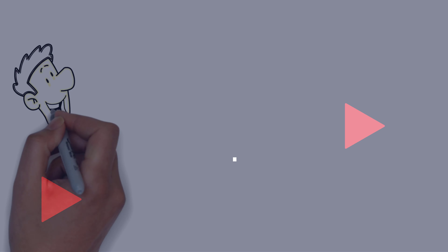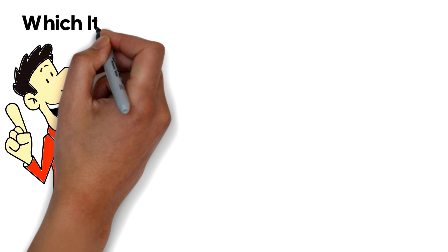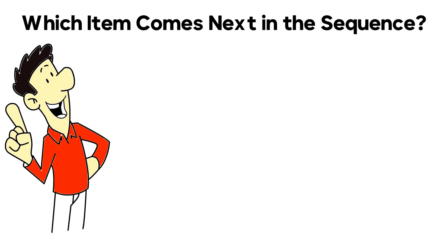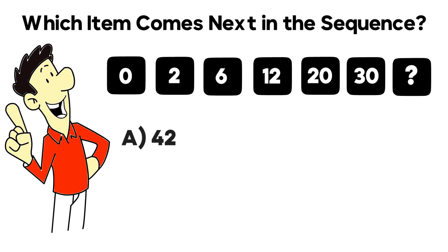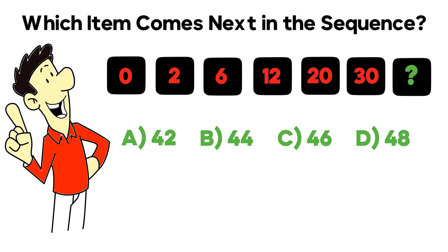Very frequently on the test you might be asked to detect the pattern. In this question, we're asked which item comes next in the sequence. Six items are visible: 0, 2, 6, 12, 20, and 30. The next item is missing, and you need to select one of four choices: A forty-two, B forty-four, C forty-six, or D forty-eight. Do you see the answer? It may or may not be obvious, depending on your skills of detecting the pattern.